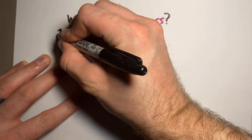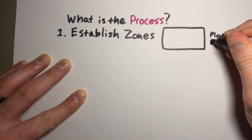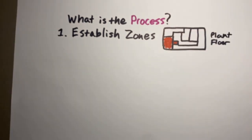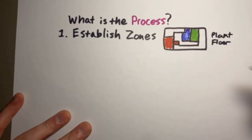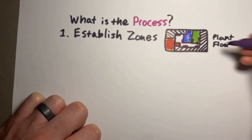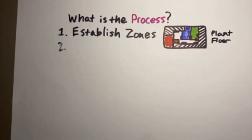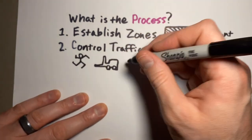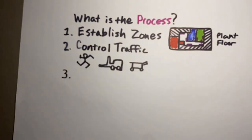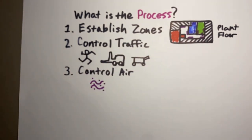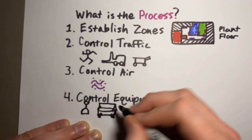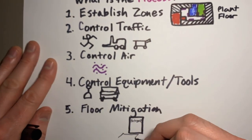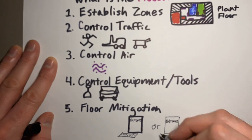So what does this process look like and what are we looking for? First, you want to establish zones in your facility. You want to evaluate what those really dirty areas look like — like the raw area and general areas — going all the way from a transition zone to when you have ready-to-eat product. Then you want to control foot traffic and wheel traffic, control airflow, control equipment and tools, and consider what you have for floor mitigation.